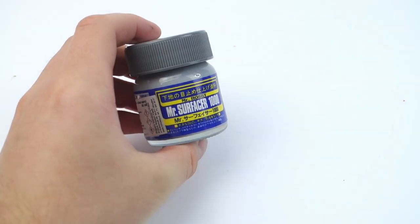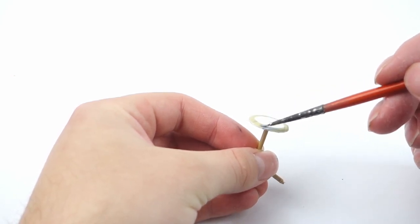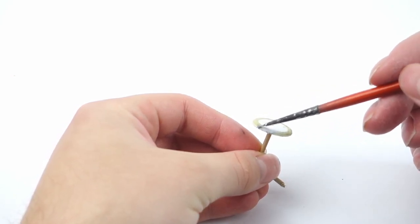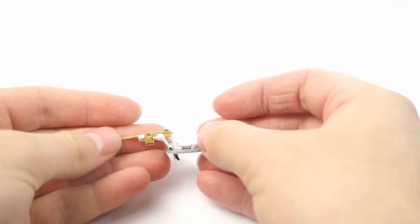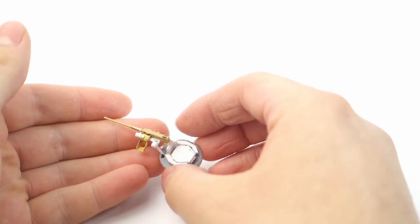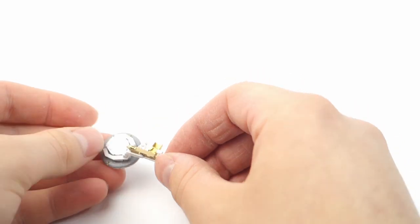This base of the commander weapon station has this shape because it was cast. To recreate the cast texture, I use Mr. Surfacer 1000 and I apply it by tapping with a brush until the desired texture is achieved. Rest of the detail was cut from plastic sheet and rod. I used the M2 MG from the kit and I improved it using PE parts from the Hauler set.